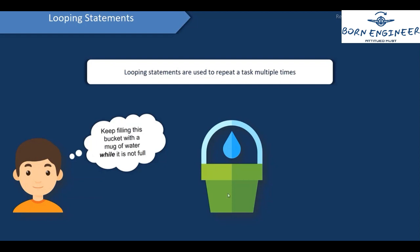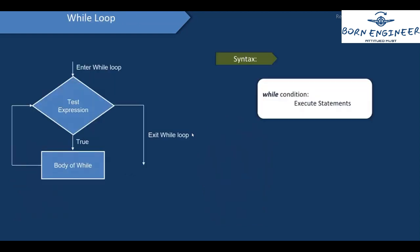We had seen this example where we had to fill up a bucket, and to fill up that bucket, we have to take a mug of water and keep pouring that mug of water until the bucket is full. The condition is while this bucket is not full, we will keep on repeating the same task. This is how the while loop works, so we'll start by working with the while loop.